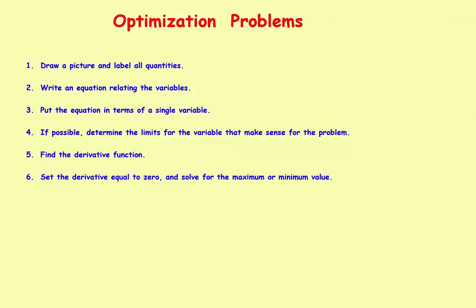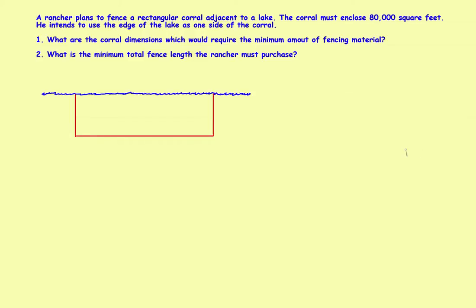Step one: draw a picture and label all the quantities. Here's the lake shown as a blue line, and we have a rectangular corral. The total enclosed area is 80,000 square feet. The two sides running up and down I'll call X — so both vertical sides are X. The bottom side I'll call Y.